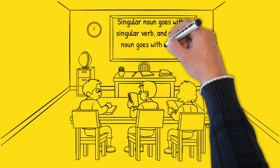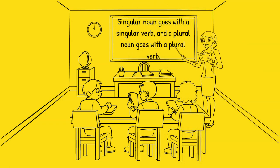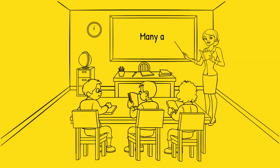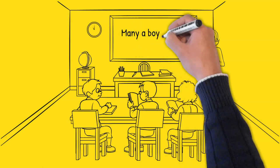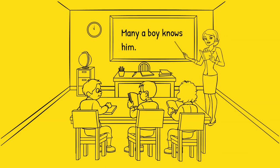Remember that a singular noun goes with a singular verb, and a plural noun goes with a plural verb. Many a is singular, so the noun that comes after it must be singular, and the verb should be singular too. Note that 'many a boy' means the same thing as 'many boys.' So the correct answer to that question is: many a boy knows him.